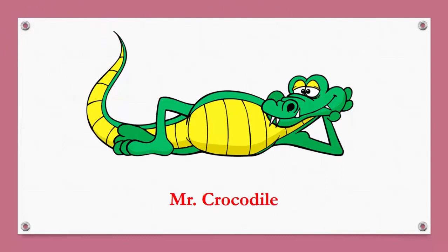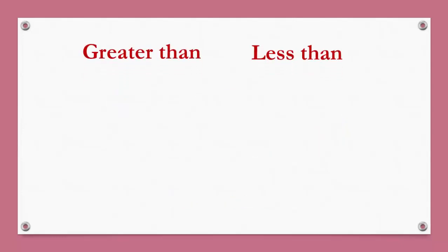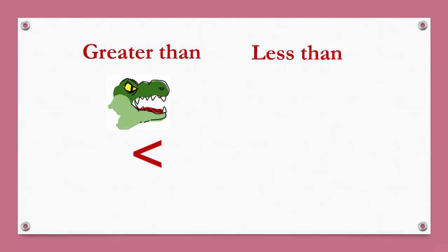Say hello to Mr. Crocodile. He will help us identify the big number and the small number. Kids, Mr. Crocodile likes to eat the big number. Mr. Crocodile always opens his mouth to the big number. So this is the greater than sign and this is the less than sign. The back of the mouth always points to the less number.